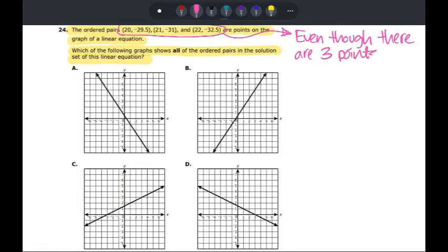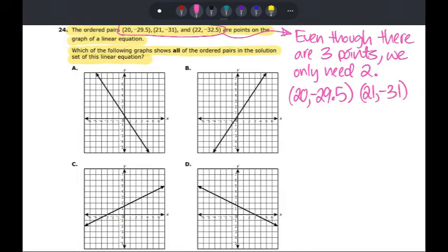It doesn't matter which points you pick. The ones that I'm going to pick are 20, negative 29.5. So I'm writing it down. And the one right next to it, the 21, negative 31.